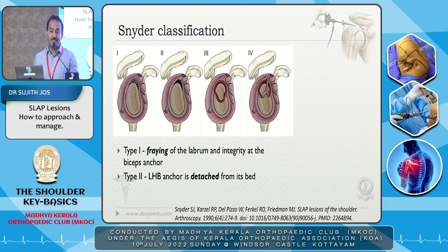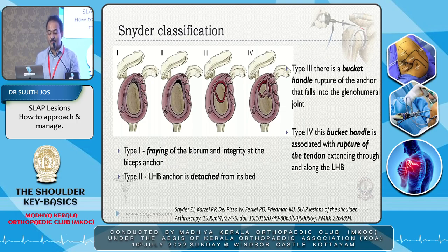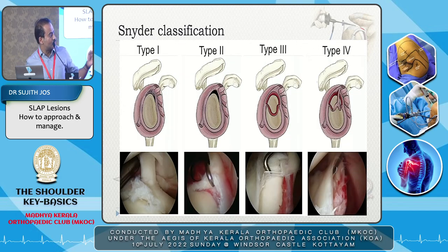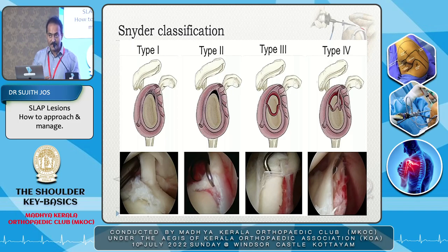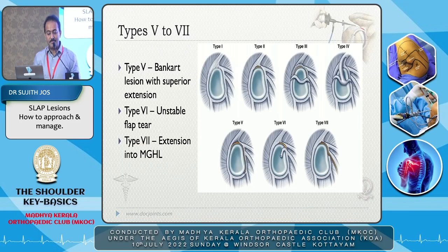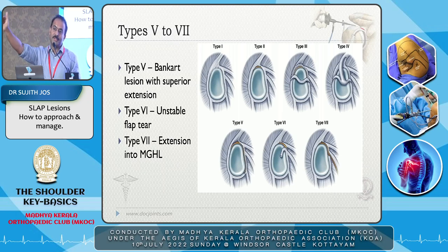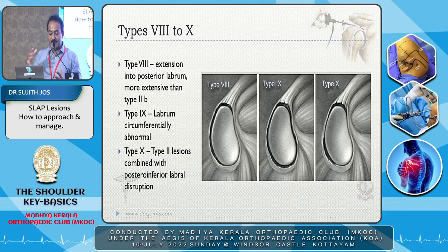Type 3 you can probably debride and leave alone, or do a tenodesis depending on the age and activity required. Type 4 is where the biceps tendon is also torn — you may not be able to salvage it. Type 5 is a superior extension with anterior extension inferiorly. Type 6 is an unstable flap tear. Type 7 is extension to the middle glenohumeral ligament in front, which may destabilize the anterior labrum.